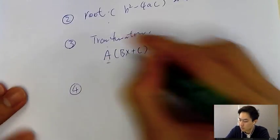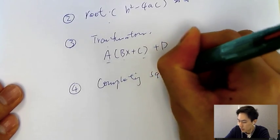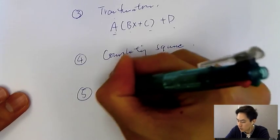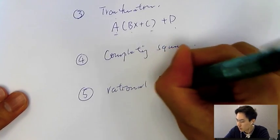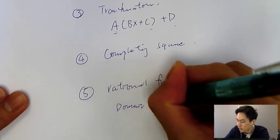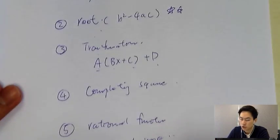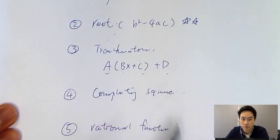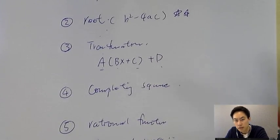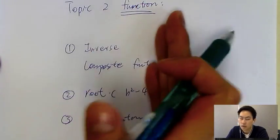The fourth question type is completing the square. And the fifth and last one is rational functions — domain and range. Basically, if you understand all five major parts across my five notes, there's no reason you cannot score at least a level seven, because all my students in function tests got level seven.